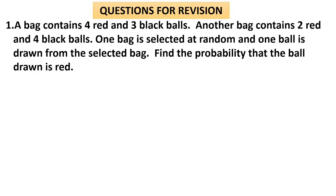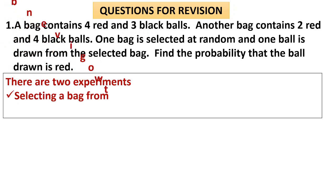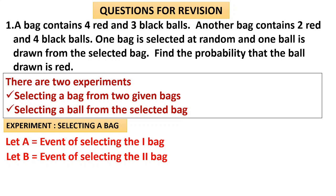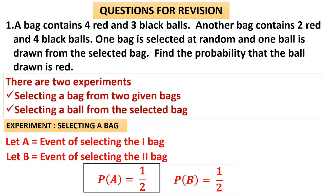Question 1: A bag contains 4 red and 3 black balls. Another bag contains 2 red and 4 black balls. One bag is selected and one ball is drawn from the selected bag. Find the probability that the ball drawn is red. There are two experiments: selecting a bag, and selecting a ball. Let A = event of selecting the first bag, B = event of selecting the second bag. P(A) = 1/2, P(B) = 1/2. If three bags were given, each probability would be 1/3.